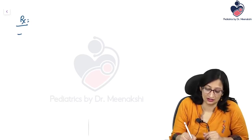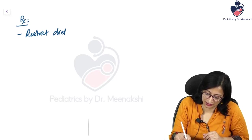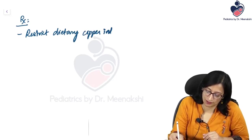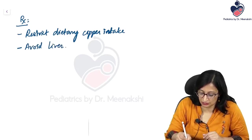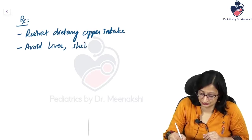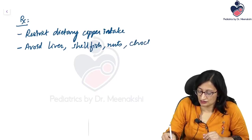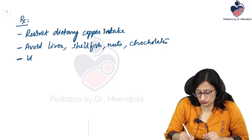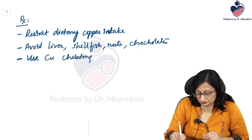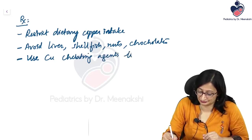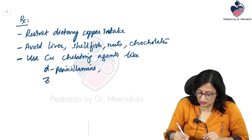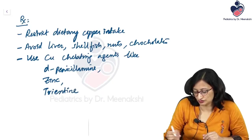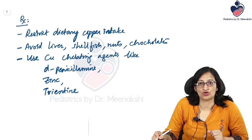Treatment of Wilson disease: Restrict dietary copper intake — avoid liver, shellfish, nuts, and chocolates. Copper chelating agents are used, including D-penicillamine. Zinc or the newer drug trientine can also be used.